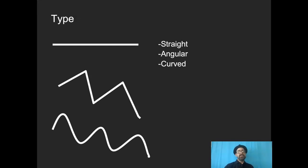Types of lines: straight, angular, curved. Again, it's so simple. And yet we don't think about our options enough when we're making lines. Oftentimes we just put things on automatic pilot.